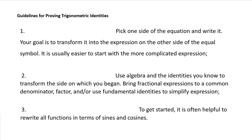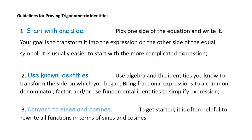Guidelines for proving trigonometric identities. Step 1: start with one side. Pick one side of the equation and write it. Your goal is to transform it into the expression on the other side of the equal symbol. It is usually easier to start with the more complicated expression. Step 2: use known identities. Use algebra and the identities you know to transform the side on which you began. Step 3: bring fractional expressions to a common denominator, factor, and use fundamental identities to simplify. It is also often helpful to convert to sines and cosines.